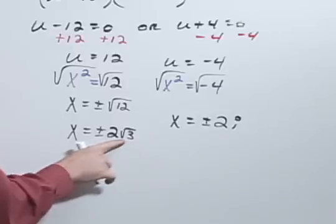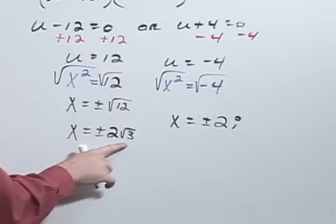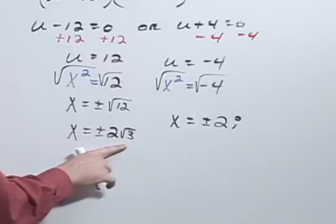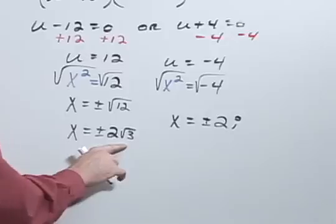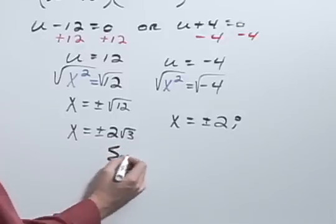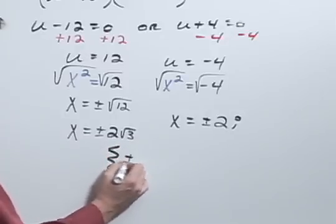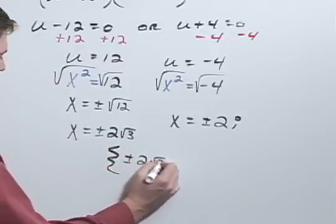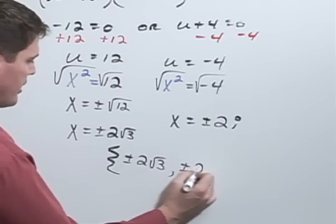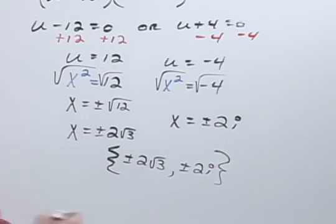Now, before I write this as solutions, it's important whenever we're doing a u-substitution to check those answers to make sure that they still work. In this case, they all do, so my answer would be positive negative 2 square root of 3, positive negative 2i.